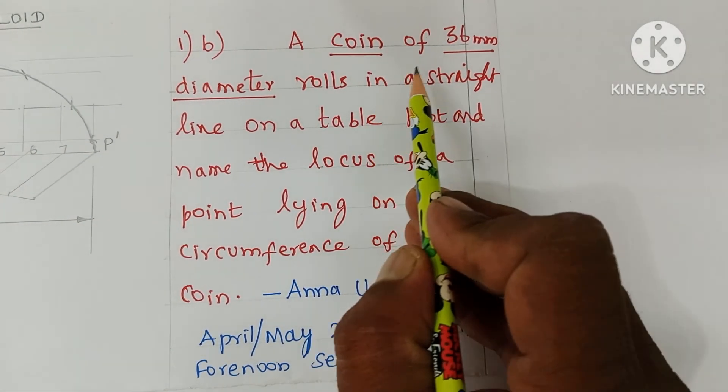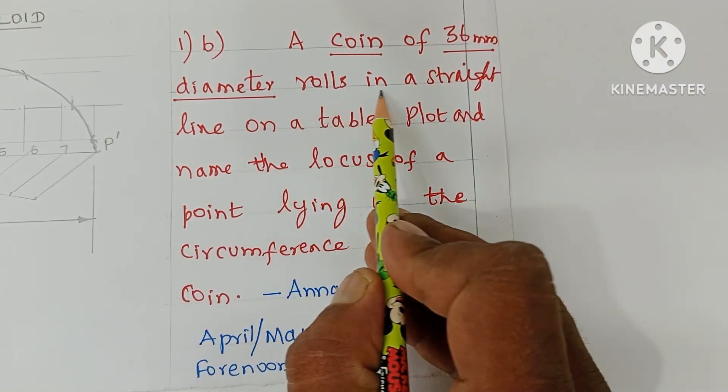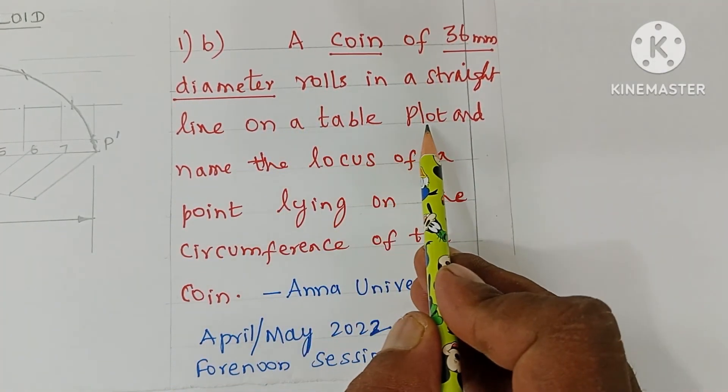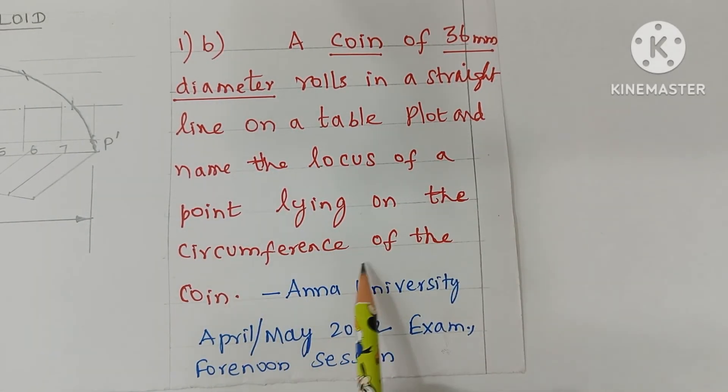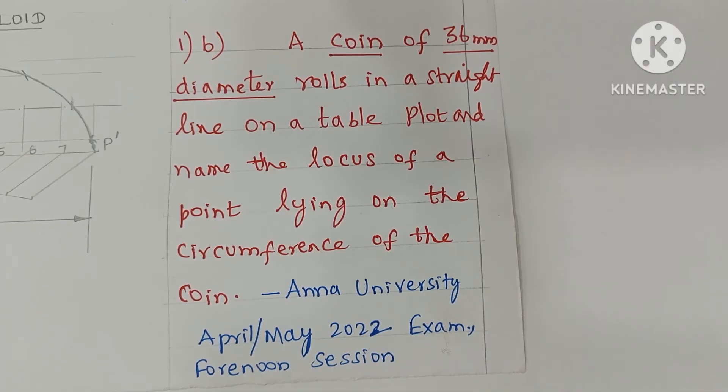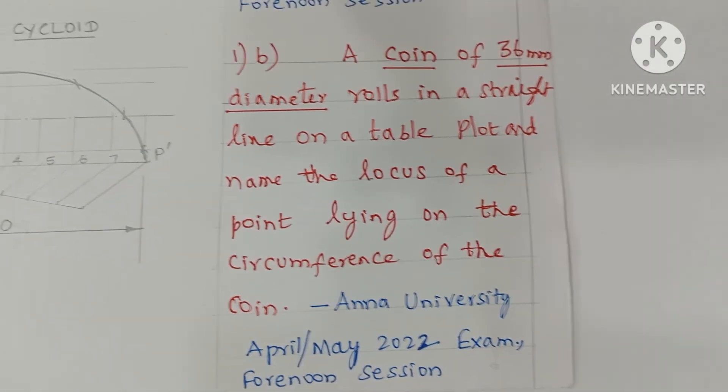A coin of 36 mm diameter rolls in a straight line on a table. Plot and name the locus of a point lying on the circumference of the coin. So the answer for this given question is cycloid.